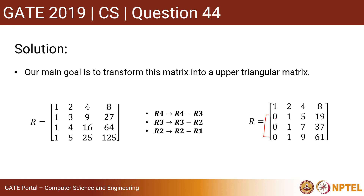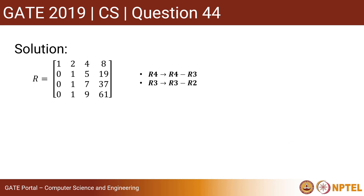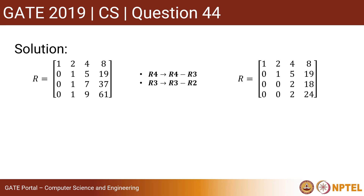Now we can observe there are three ones in the next column, so we can easily get a 0 by subtracting one row from another. We apply the transformations row 4 = row 4 minus row 3, and row 3 = row 3 minus row 2. Here is the result — we have got two more zeros.